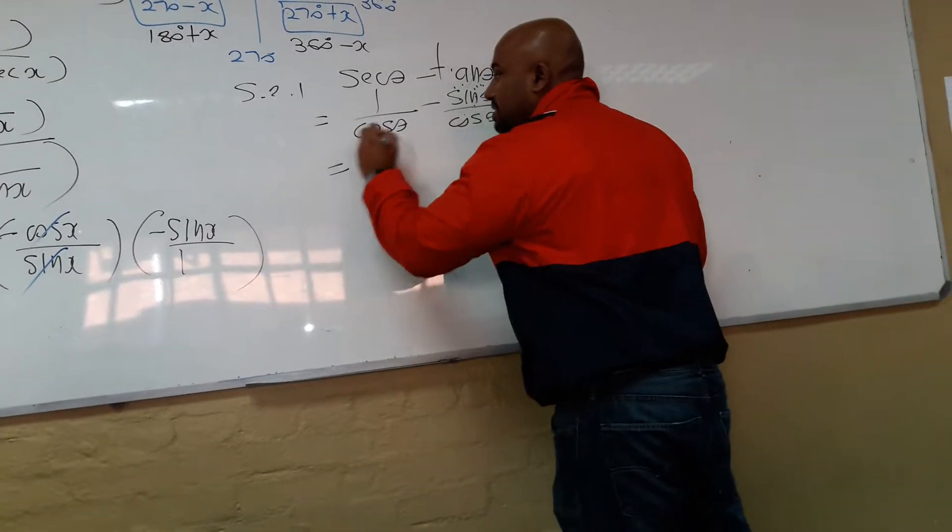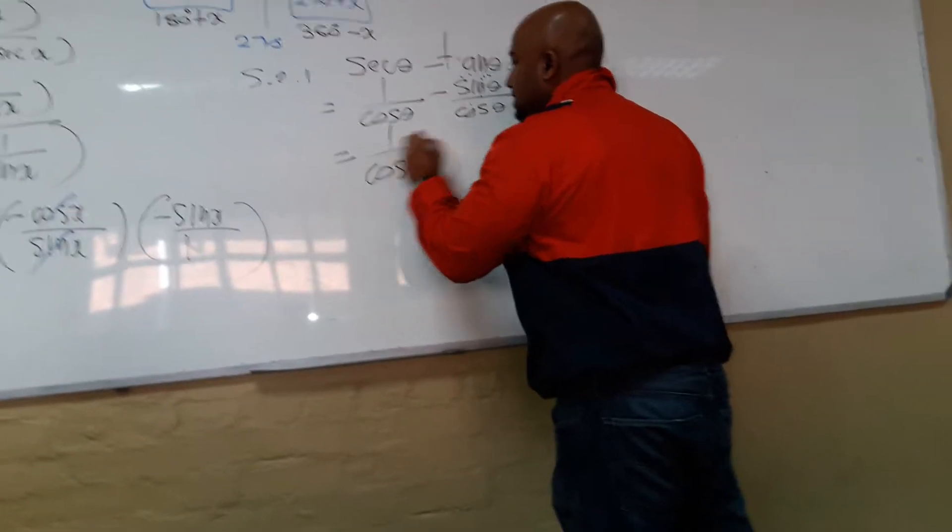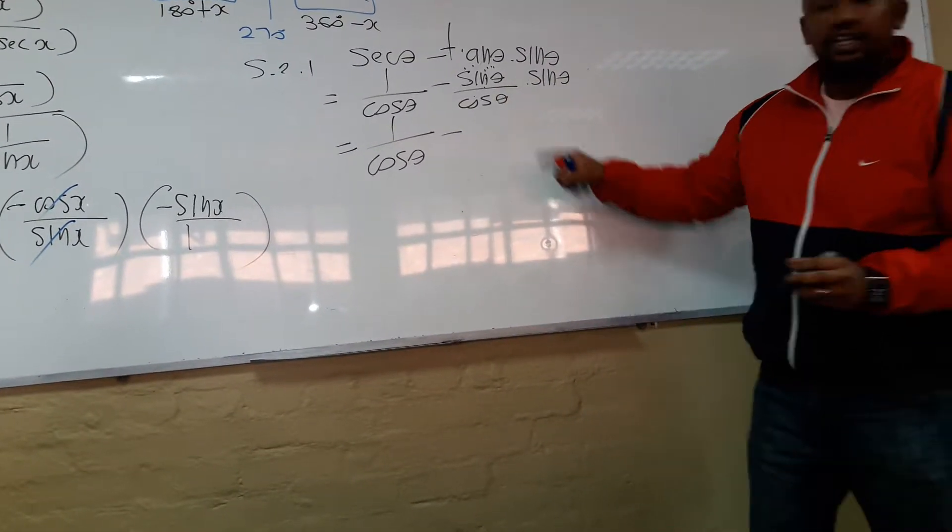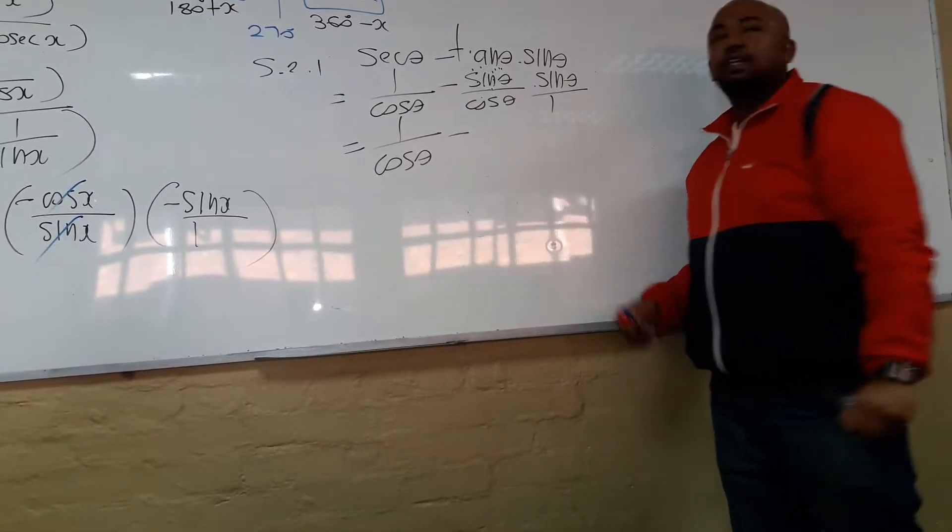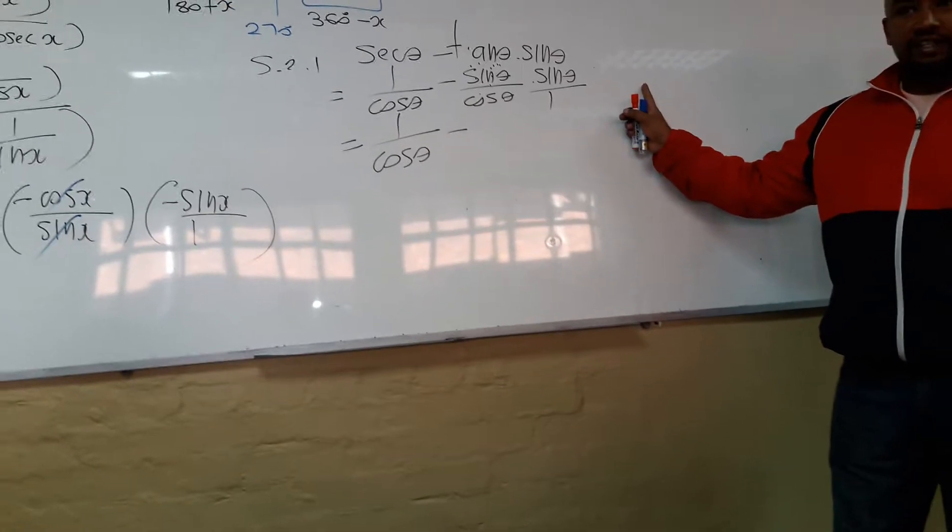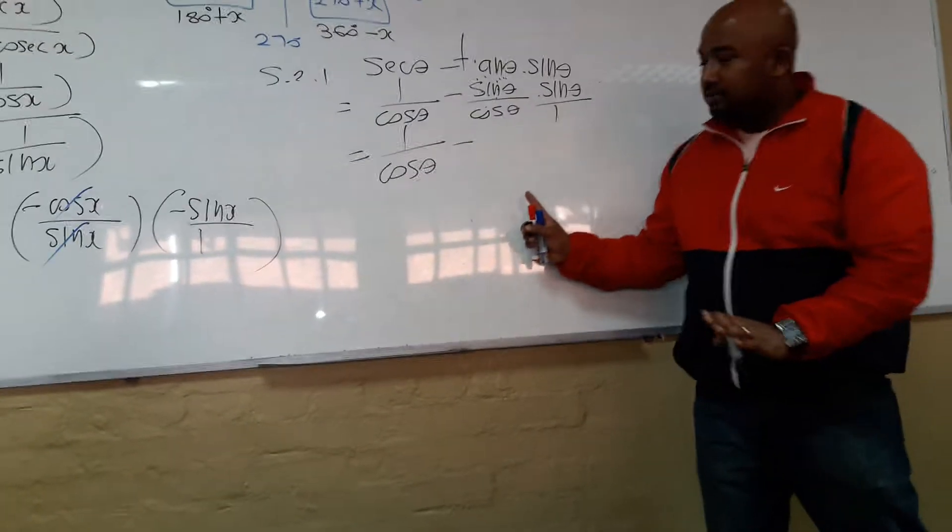What about tan? We just wrote it down. That will be sine zeta all over cosine zeta and then we have sine zeta. Okay. So, now, this is 1 over cosine. What do we have here? Sine over cosine is a fraction. So, therefore, sine over 1 is the other fraction. Can you see that? So, what do we, how do we multiply?